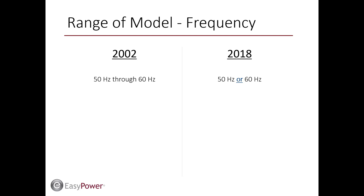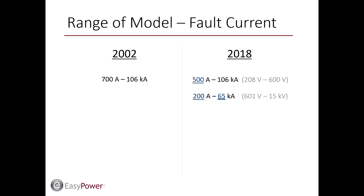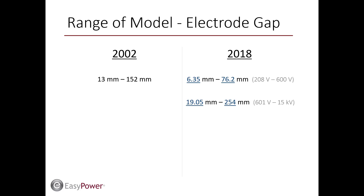The frequency range supported in the new standard is now explicitly 50 Hz or 60 Hz and no longer inclusive of frequencies between. This does not represent a major change as these calculation methods are typically applied at either of the specified frequencies. The range of bolted fault current supported by the new arc flash model is now dependent on voltage. The high end of the range sees a significant decrease for equipment greater than 600 volts. While a reduction to 65,000 amps is noteworthy, high voltage equipment does not typically experience fault currents exceeding this value.